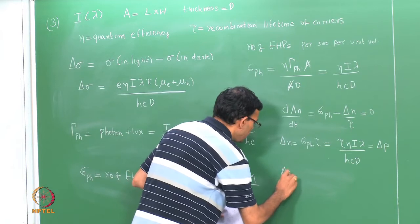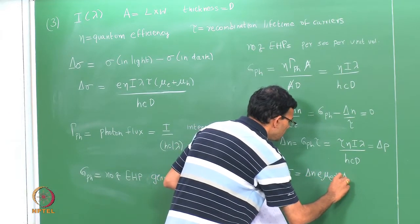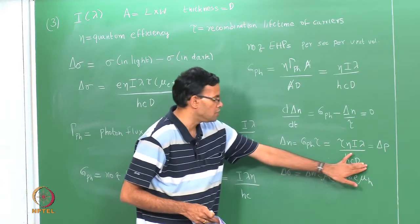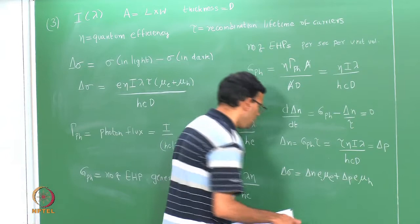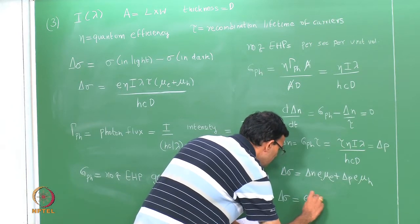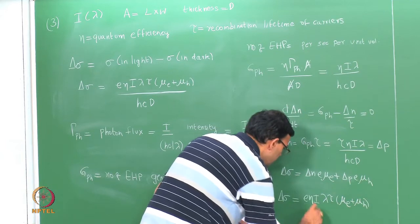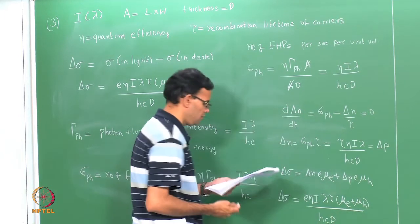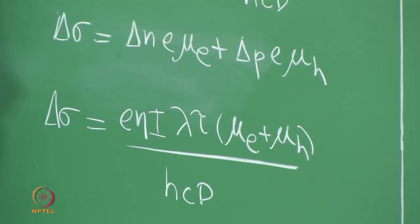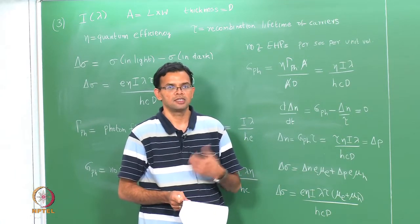The change in conductivity Δσ = Δn·e·μ_e + Δp·e·μ_h. Since these two terms are equal, taking them out and rewriting we get the final expression: Δσ = eηI(λ)τ(μ_e + μ_h) / (hcd). This is similar to the previous problem but gives a more general expression that accounts for the carrier lifetime and excess carriers generated.